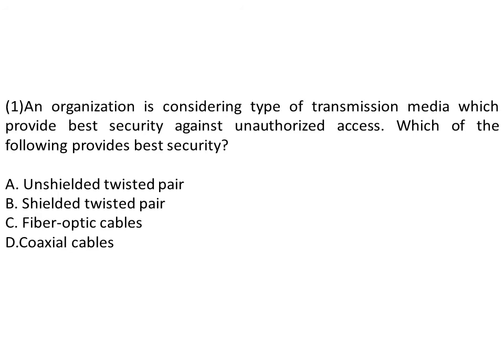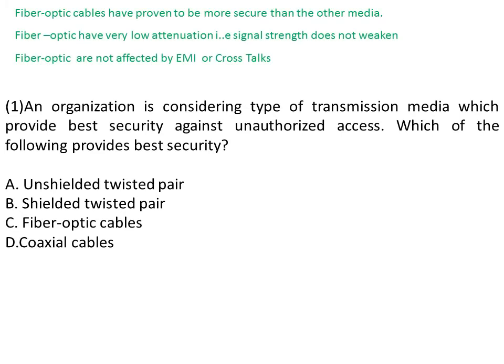CISA practice question: An organization is considering types of transmission media. Which provides the best security against unauthorized access? Remember, fiber optics is more secure than other media — it has low attenuation and is not affected by EMI or crosstalk. So the answer is fiber optic cables.